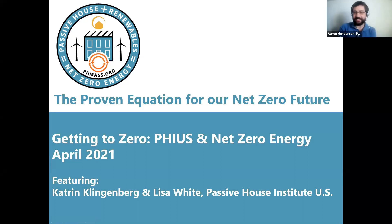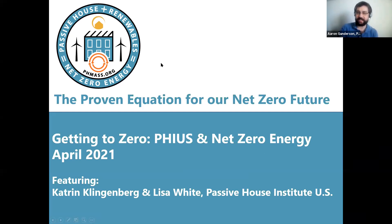This is our April meeting. We're talking about getting to zero with FIAS and net zero energy. This is part of our overall campaign on passive house plus renewables equals net zero energy, which is the proven equation for our net zero future. So this fits into that series. We're going to continue this series in the months to come. I'm going to turn it over to Hank Keating in a moment, but I do want to give an overall welcome to our future speakers tonight, Kat McClingenberg and Lisa White from FIAS. Very great to have you both here.